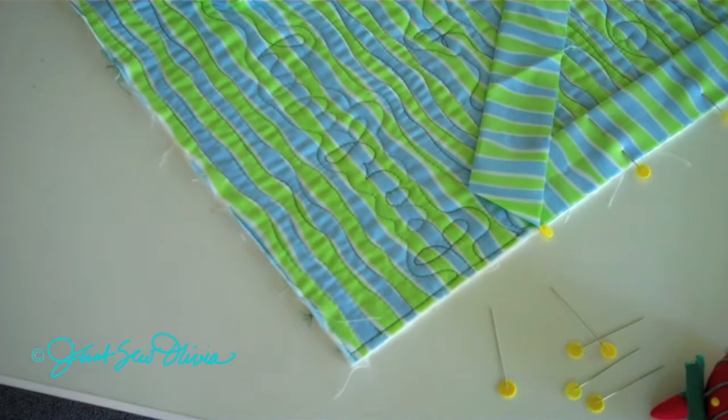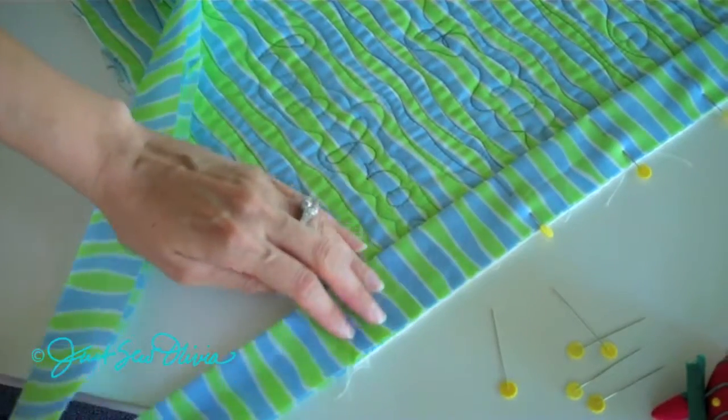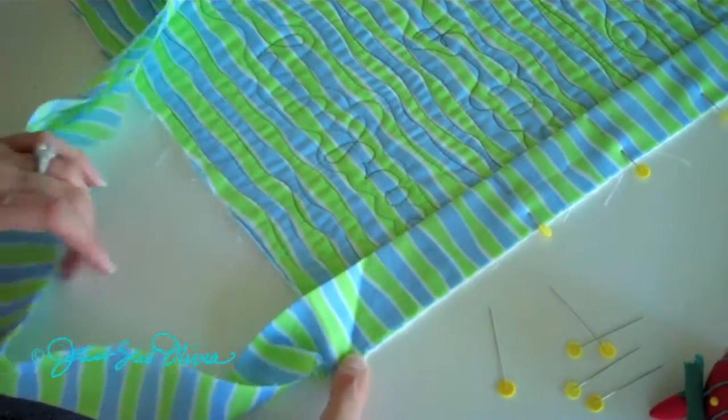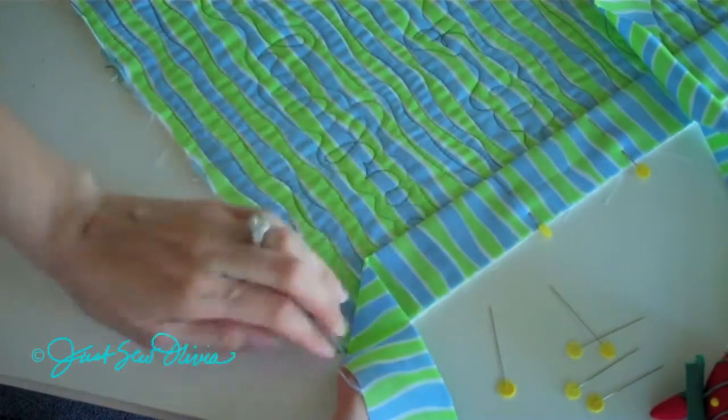When you bind a quilt, it can be a little bit tricky to turn the corner, so here's what you do. Bring your binding down all the way to the corner, and right at the point of that corner, place your thumb or finger, and take the binding and turn it over the edge of the quilt.